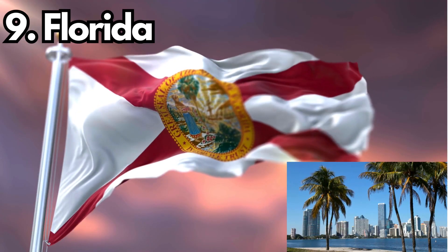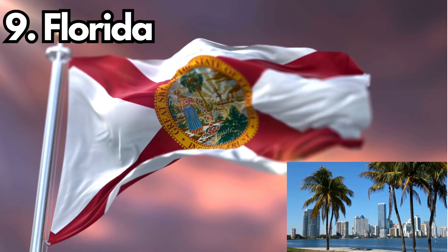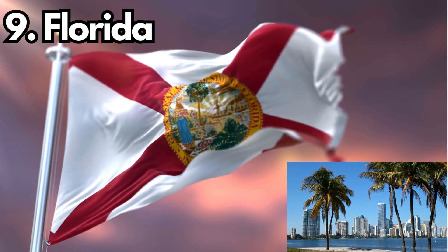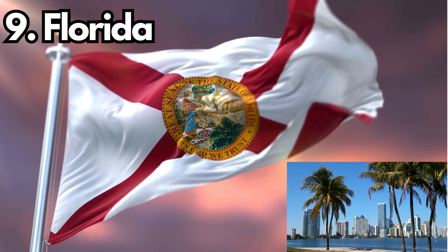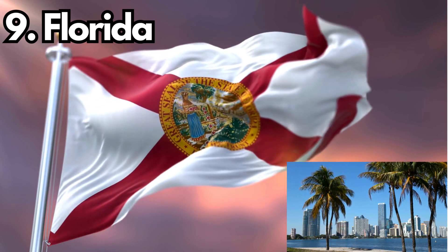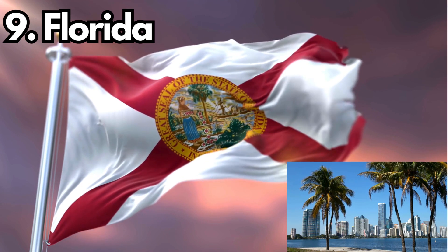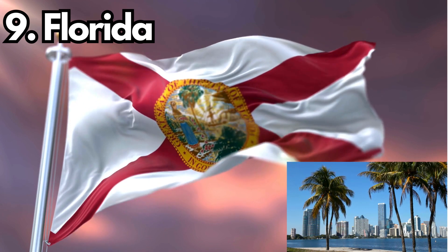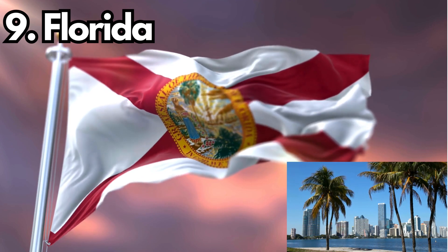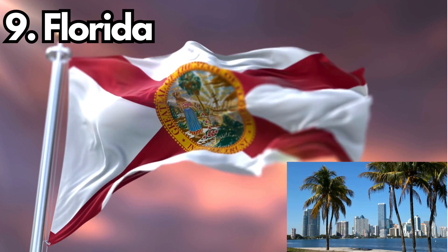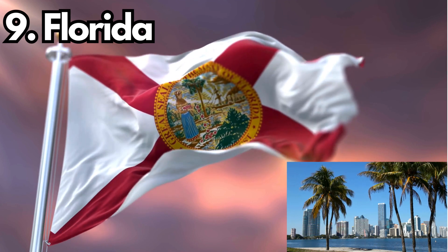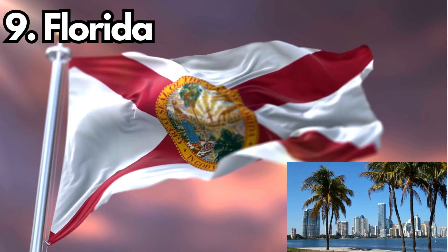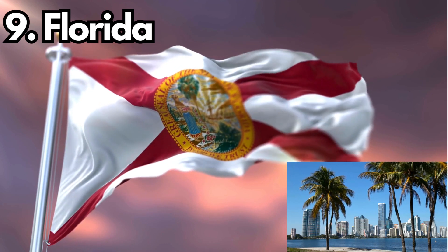9. Florida. Design: The Florida state flag consists of a red saltire cross on a white background with the state seal in the center. Meaning: The red saltire represents the cross on which St. Andrew, the state's patron saint, was crucified. The seal features a Seminole woman, a sabal palm, a steamboat, and a cocoa tree. History: The current design was adopted in 1900, with modifications made in 1985.